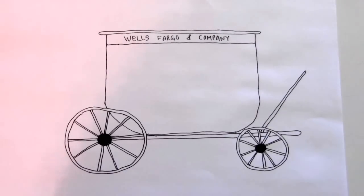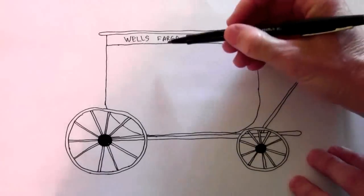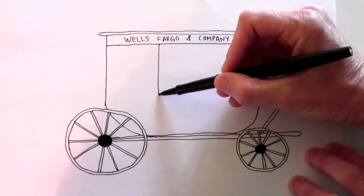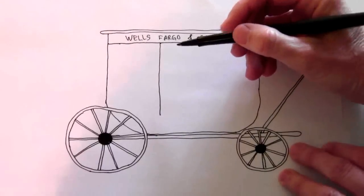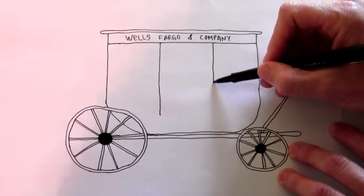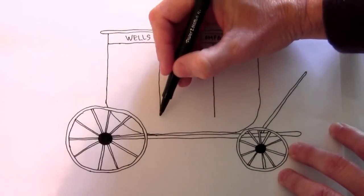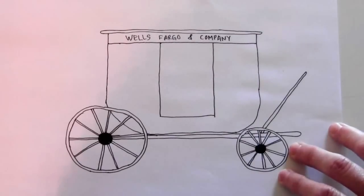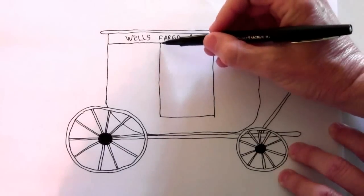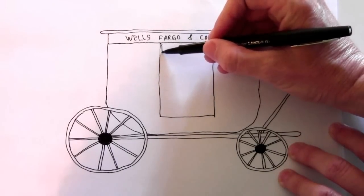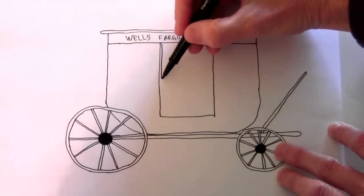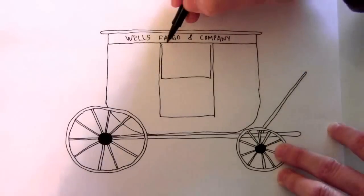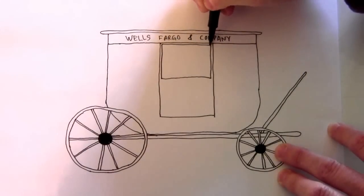Now we'll make the door. So right about in the middle, as best you can guess, and draw a straight line down, not all the way down, and a straight line down, and then connect them. Doesn't have to be perfect. Then there's a large window here. So go almost all the way to the edge and draw a square that is as big as it can be without touching the other lines.